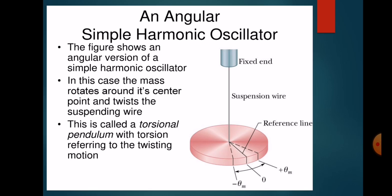In angular simple harmonic motion, the figure shows the angular version of a simple harmonic oscillator. In this case, the mass rotates around its center point and twists the suspending wire. We show the disc next to the appearance on the upper disk. The rotation of the disk is not a full 360 degrees — if it were a full 360-degree rotation, it would be rotational motion rather than angular simple harmonic motion.